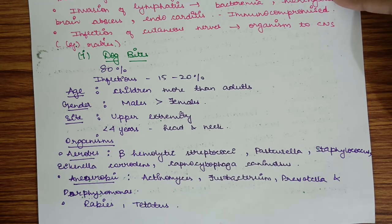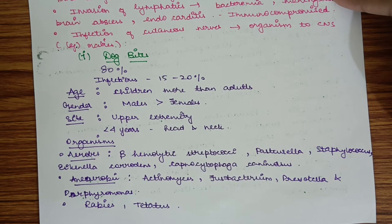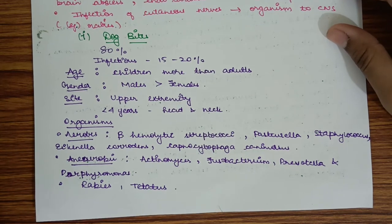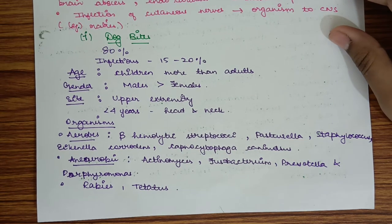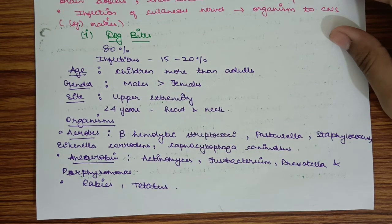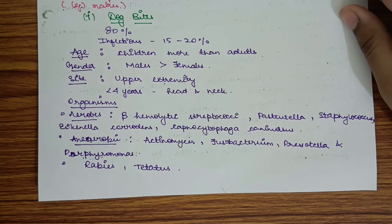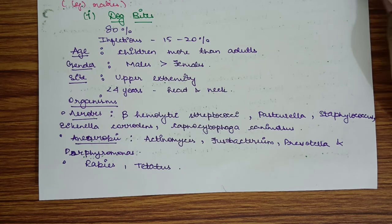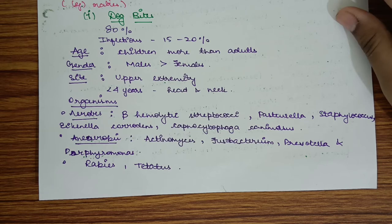Age: it occurs in children more than adults and in males more than females. Site: upper extremity is the most common site; however, in less than 4 years of age, it can also be seen in head and neck. Organisms include aerobes such as beta-hemolytic streptococci, Pasteurella, Staphylococcus, Eikenella corrodens, Capnocytophaga canimorsus. Anaerobic organisms include Actinomyces, Fusobacterium, Prevotella, and Porphyromonas.